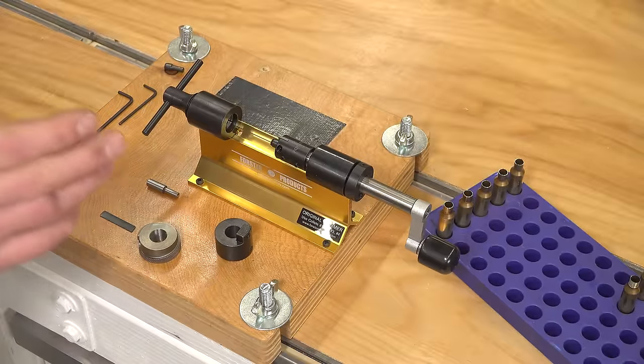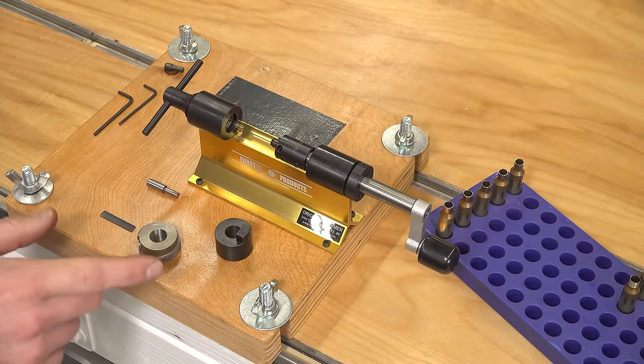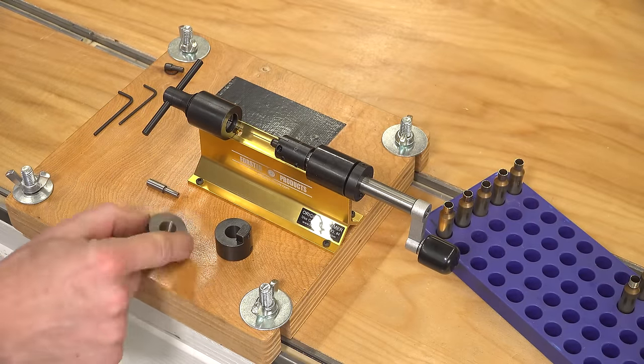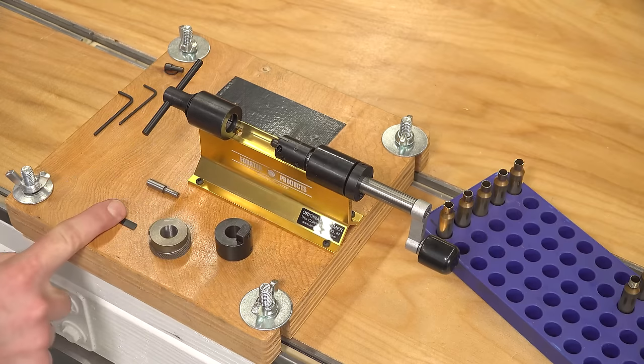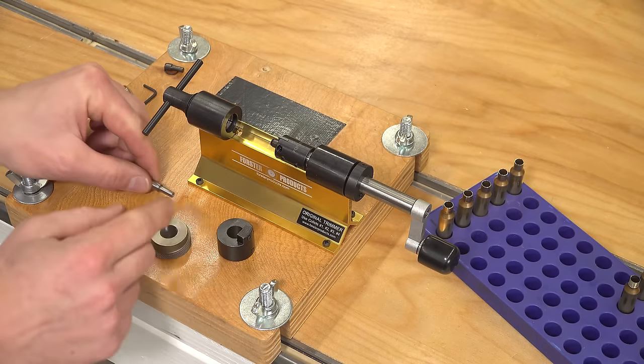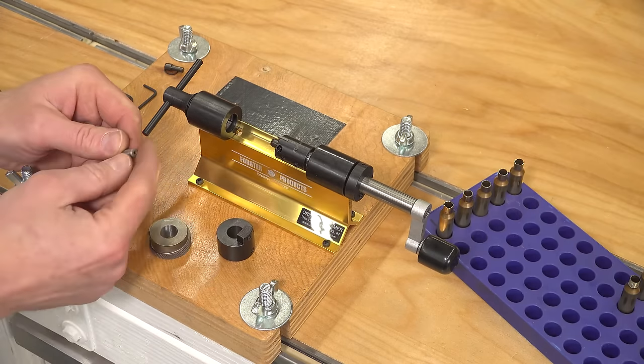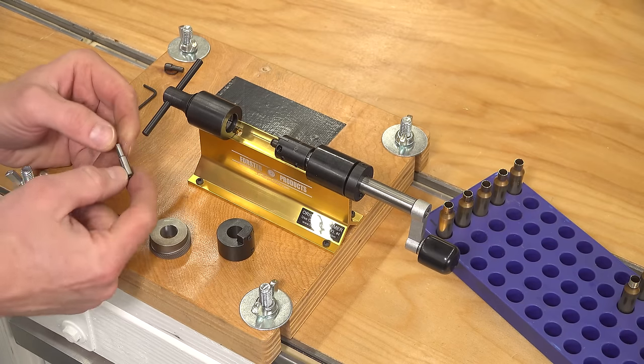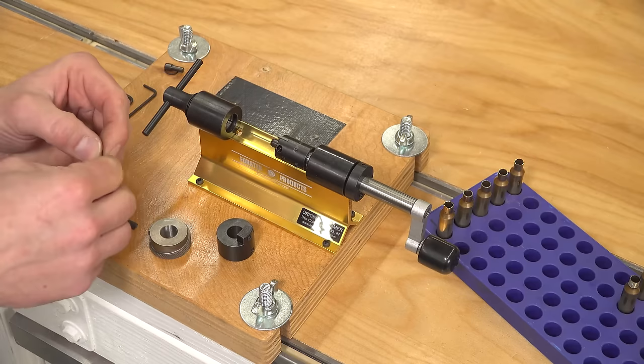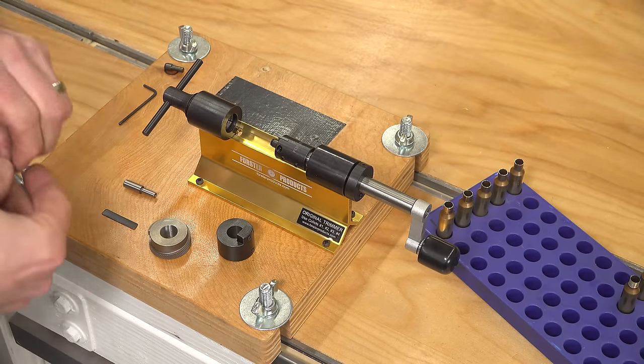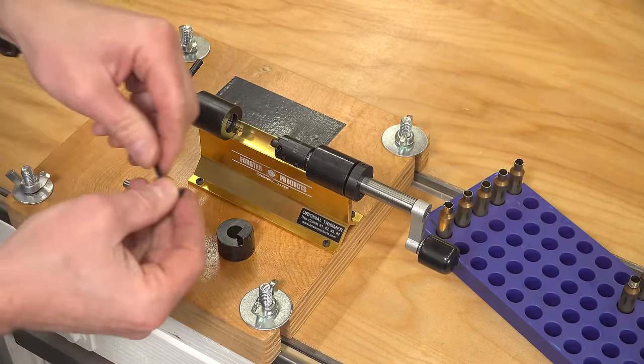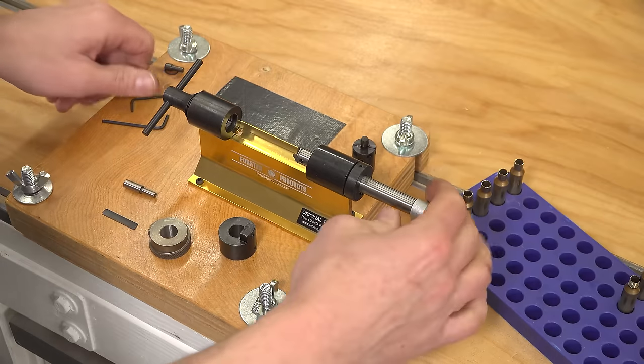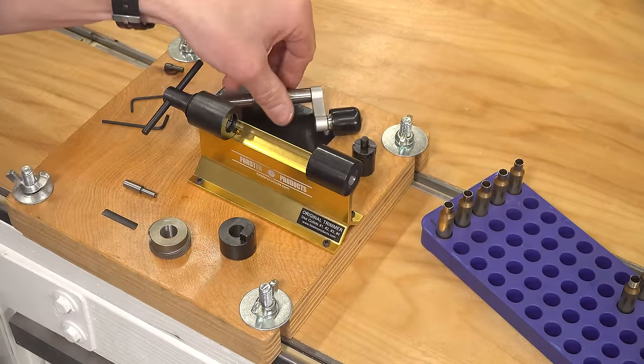The Forster outside neck turner accessory is essentially a package that has this feeder cam that controls the infeed, the cam follower, the cutter head, and then for the particular bullet diameter or inside neck diameter that you're going to be turning, there's special pilots for this outside neck turning assembly. I'll show you the installation process here real quick. We're going to go ahead and remove the 3-in-1 cutter and then remove the cutter and handle assembly.